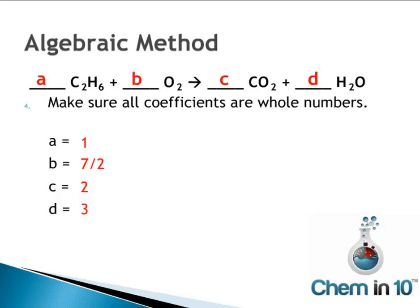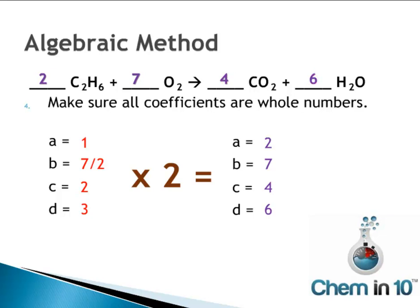However, all coefficients must be whole numbers — B cannot be a fraction or decimal. So we multiply all coefficients by 2: A becomes 2, B becomes 7, C becomes 4, and D becomes 6. The balanced equation is 2C2H6 plus 7O2 yields 4CO2 plus 6H2O.